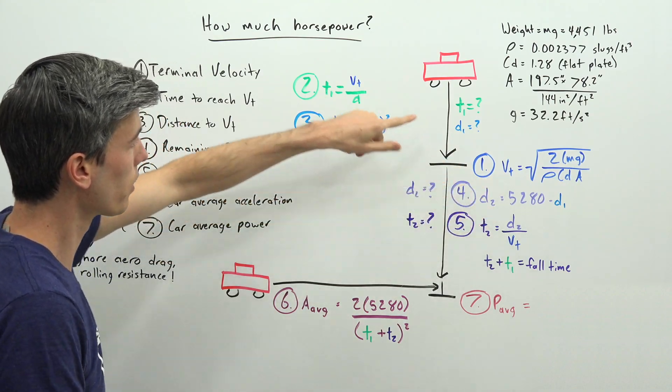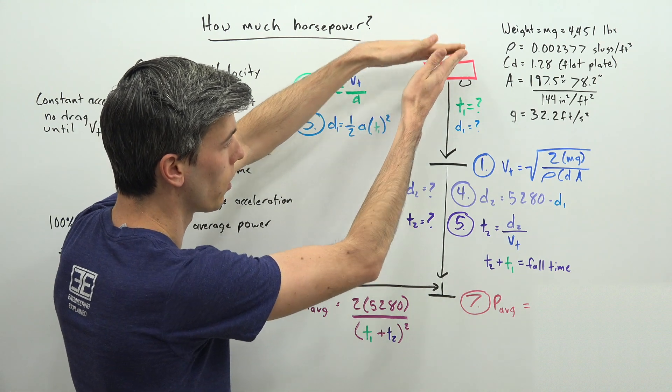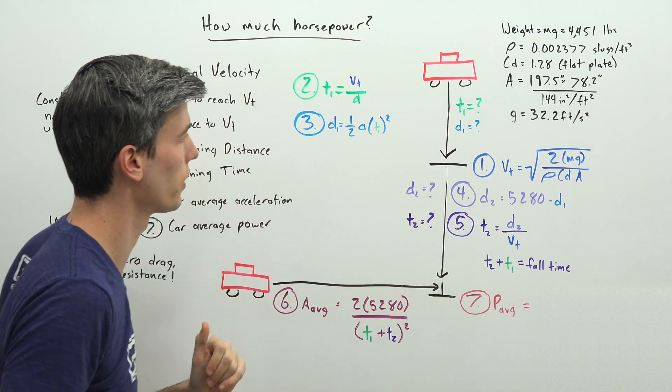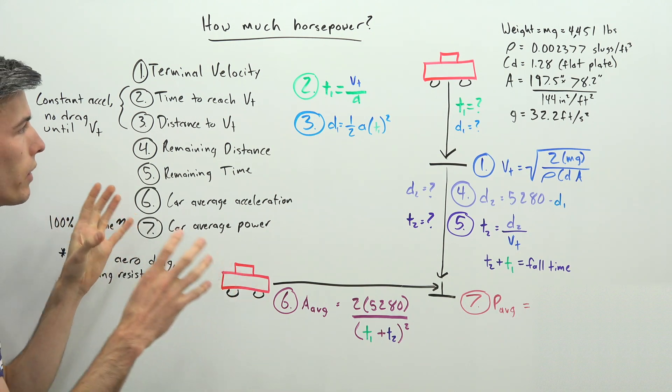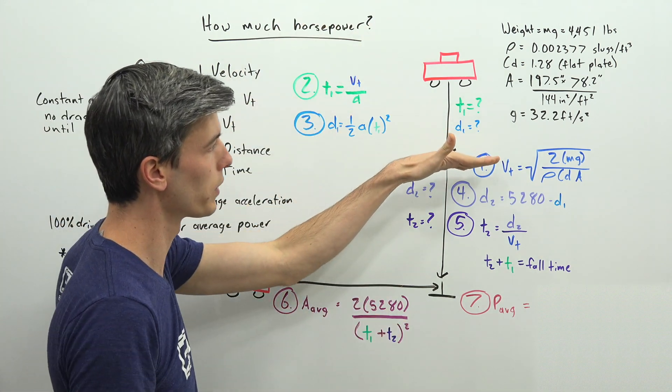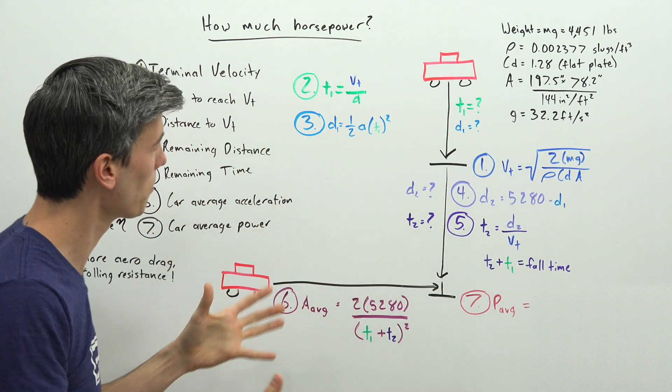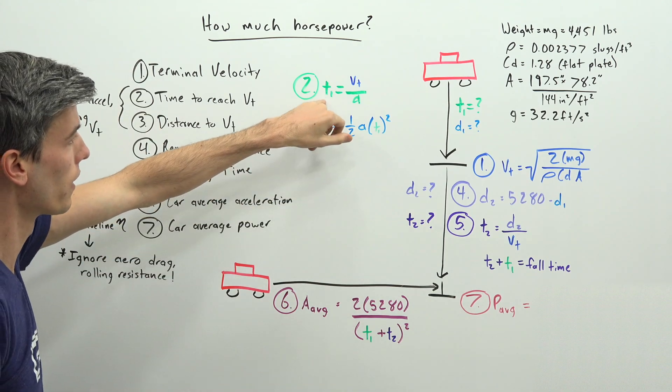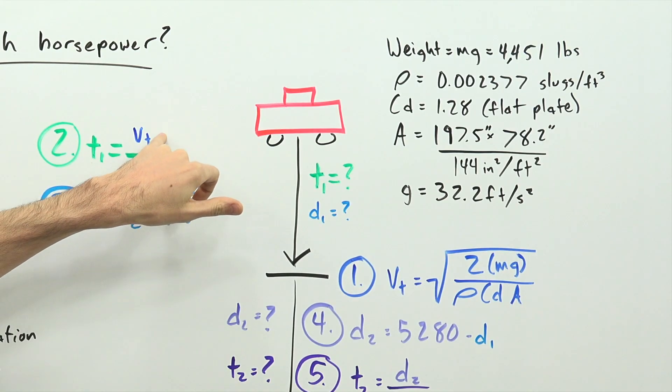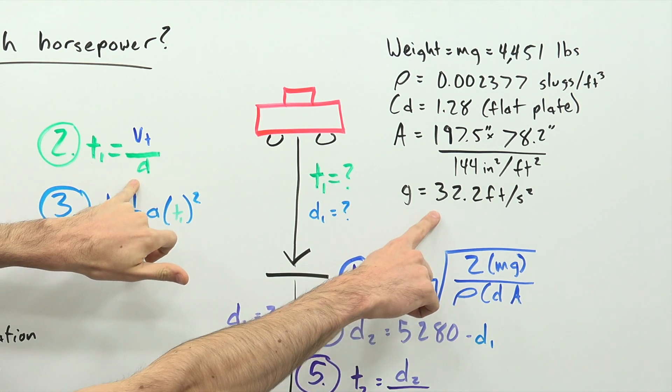Now once we have our terminal velocity, we can figure out how much time does it take the car to reach that terminal velocity, with the assumption that we don't have to worry about aerodynamic drag until it reaches that terminal velocity. That makes the math quite a bit easier here. So that time one is just our terminal velocity divided by acceleration which is provided.